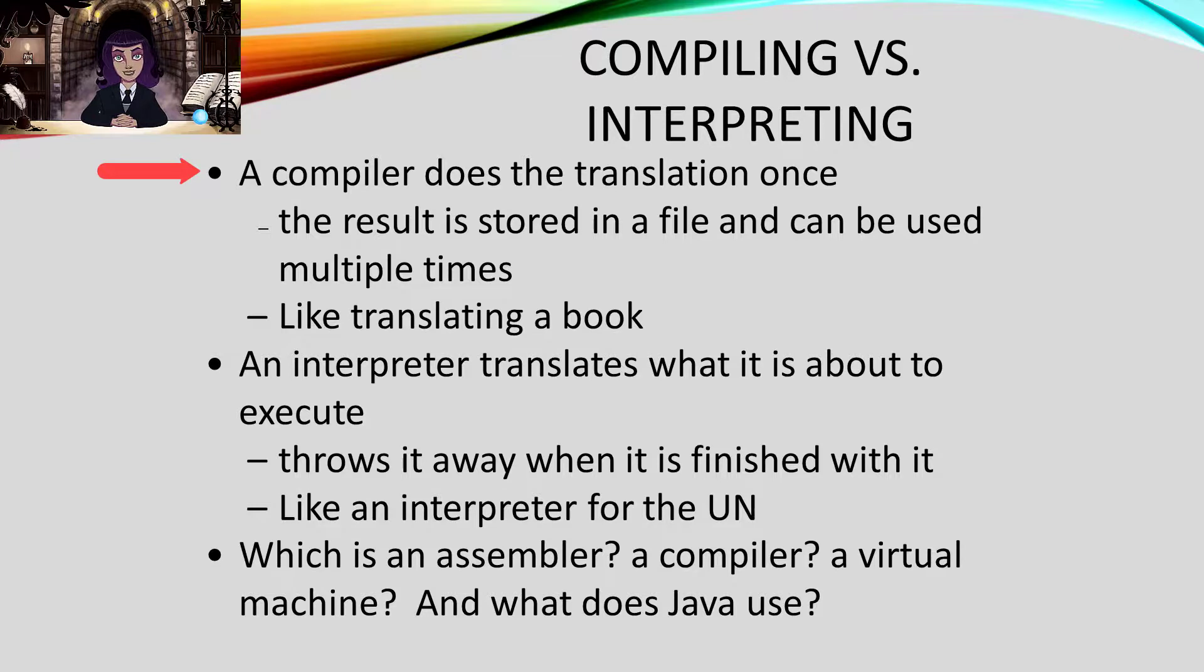Wouldn't it be nice if we used different words instead of having two meanings for the word compiler? I agree with you, Zoomy. Compiler can mean the specific piece of software that is translating a high-level language into machine code, like the Java compiler compiling into Java bytecode, or it can mean anything that is making a translation once and saving it so it can be used over and over again.